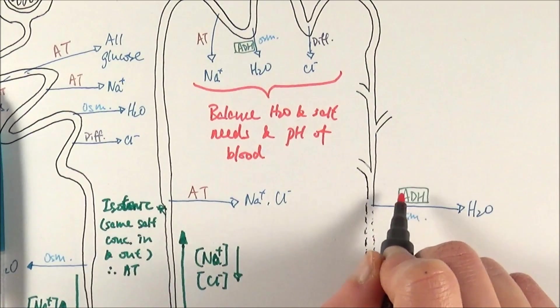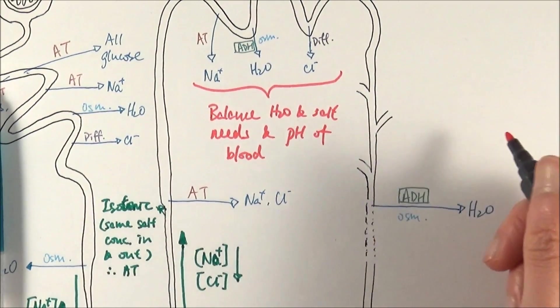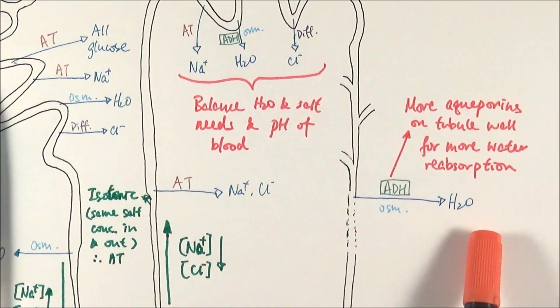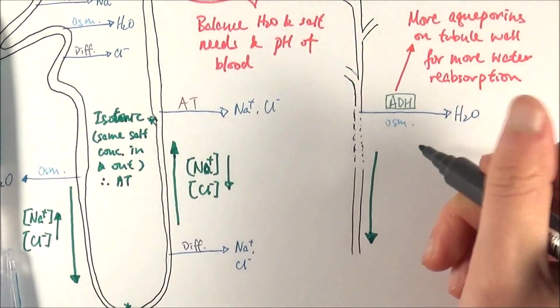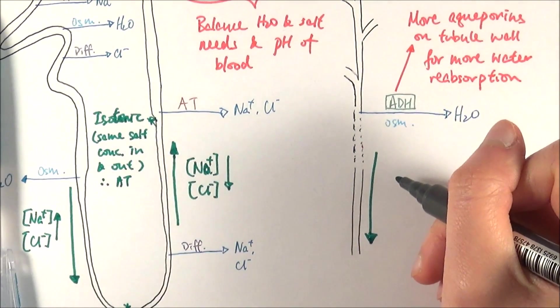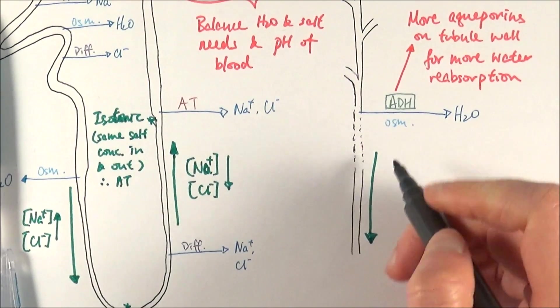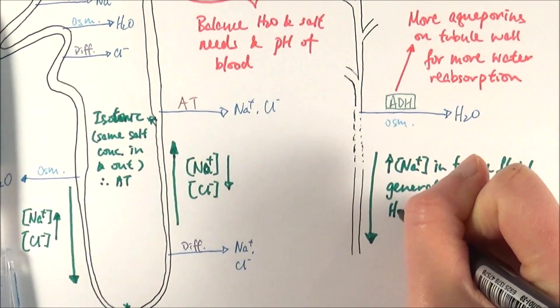So what ADH does is it tells the tubule wall to actually deposit more protein channels that transport water called aquaporins. If we've got more ADH, we get more water reabsorption. Another thing that is worth noting is as we go down the collecting duct here, sometimes the cells around can actually change the concentration of salts in the tissue fluid, which is directly surrounding the tubules before going into the blood, generates a steep water concentration gradient.